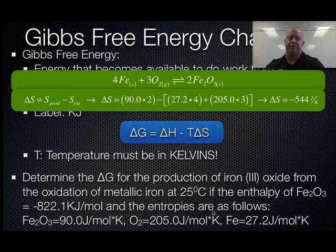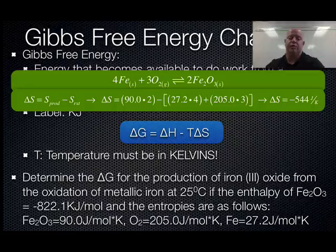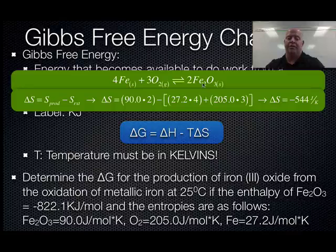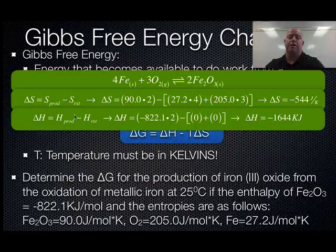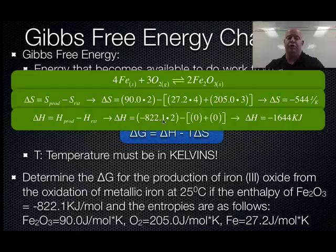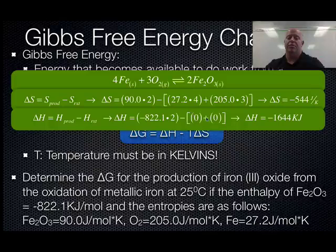The next step is finding the enthalpy change. This is pretty easy because we only have one enthalpy value — both oxygen and iron are zero. Our product has enthalpy of negative 822.1, and since there are two moles of it from the balanced equation, ΔH = negative 822.1 × 2 = negative 1644 kilojoules.